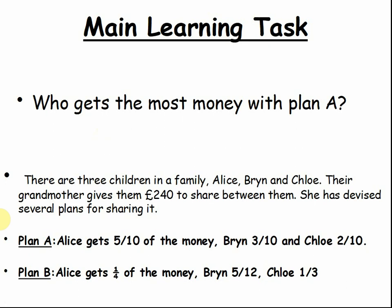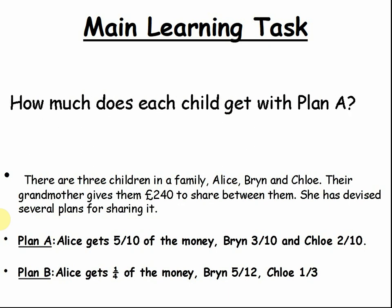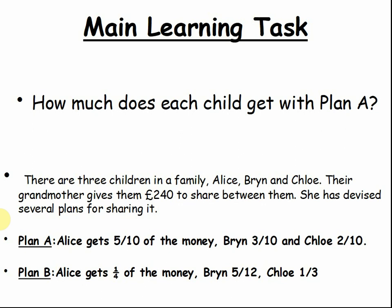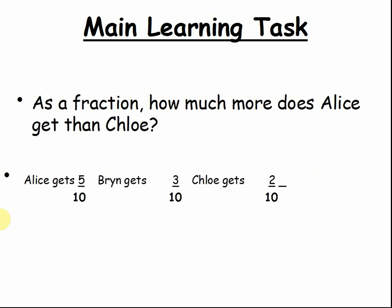Who gets the most money with plan A? Pause the video and tell the teacher. That is right — Alice gets the most money because she gets five tenths of it. Who gets the least money with plan A? That's right again — that would be Chloe. She gets the least because she has two tenths of the money. How much does each child get with plan A? Pause the video and work it out. As a fraction, how much more does Alice get than Chloe? Pause the video and tell the teacher. Five tenths take away two tenths equals three tenths.